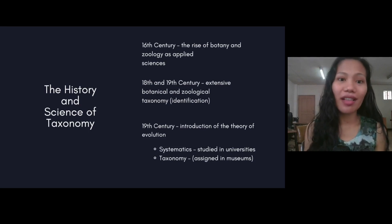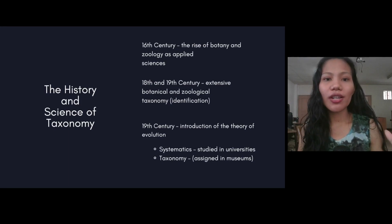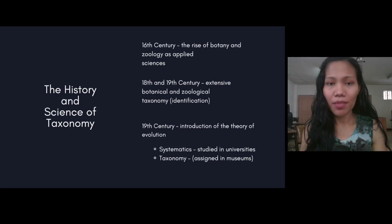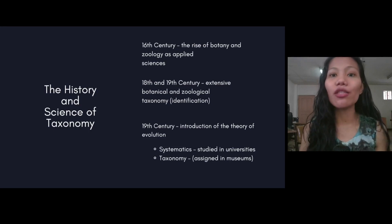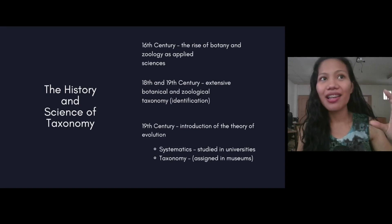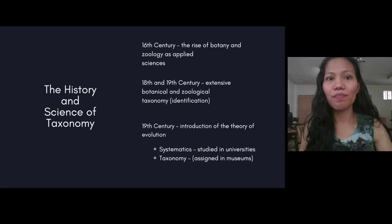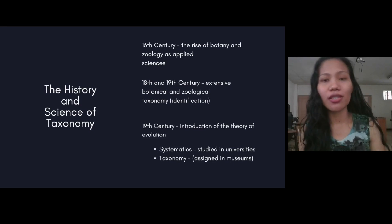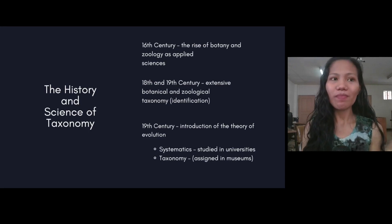Zoologists and botanists were at the same level in naming and identifying organisms. As they compared organisms, someone in the 19th century fell into the rabbit hole of questions — how did these differences come about? This spurred Darwin's 'Origin of Species.' The theory of evolution was actually driven by those studying diversity at that time. The role of taxonomists and systematists was very important, as the questions they asked led us to the theory of evolution.